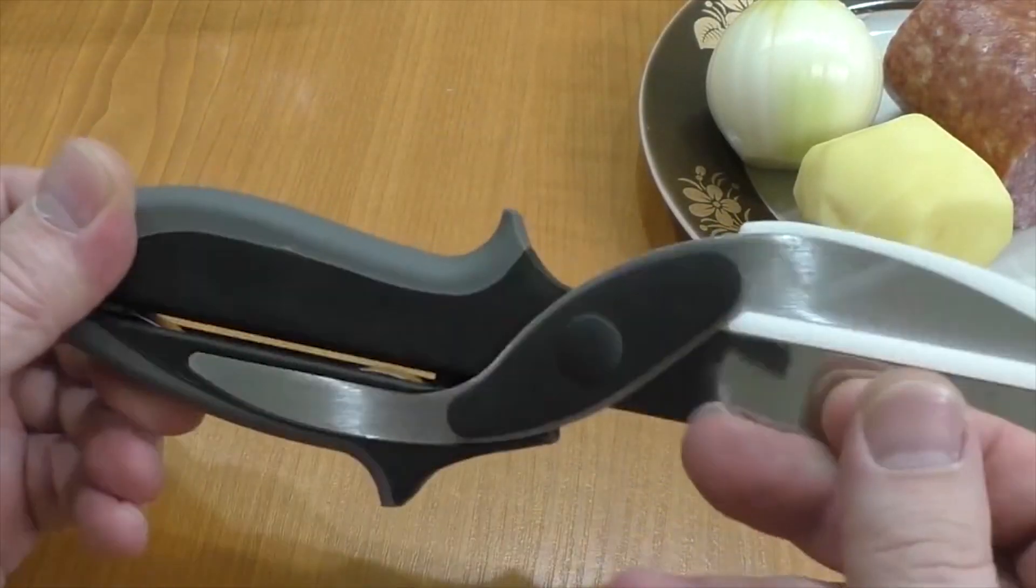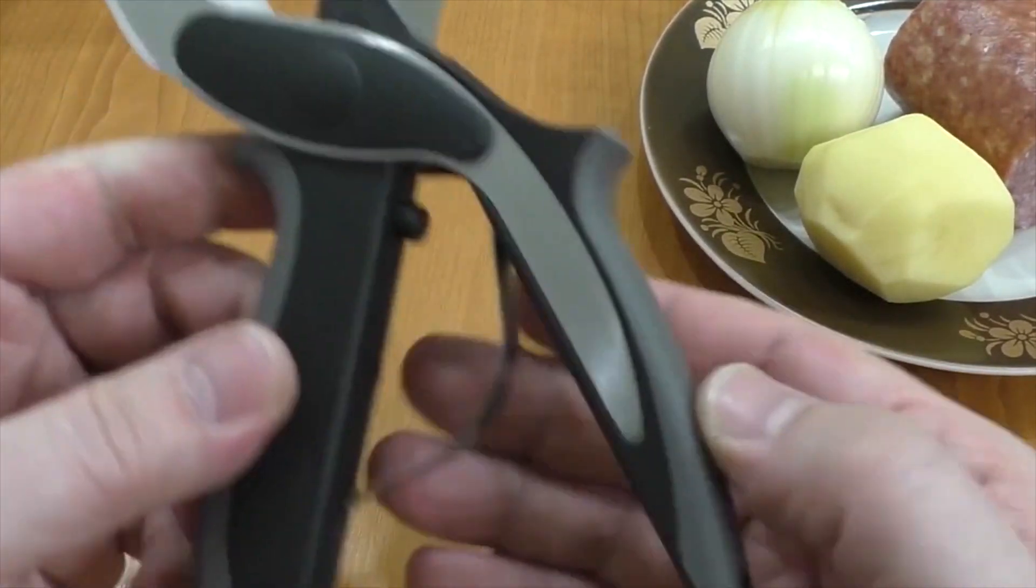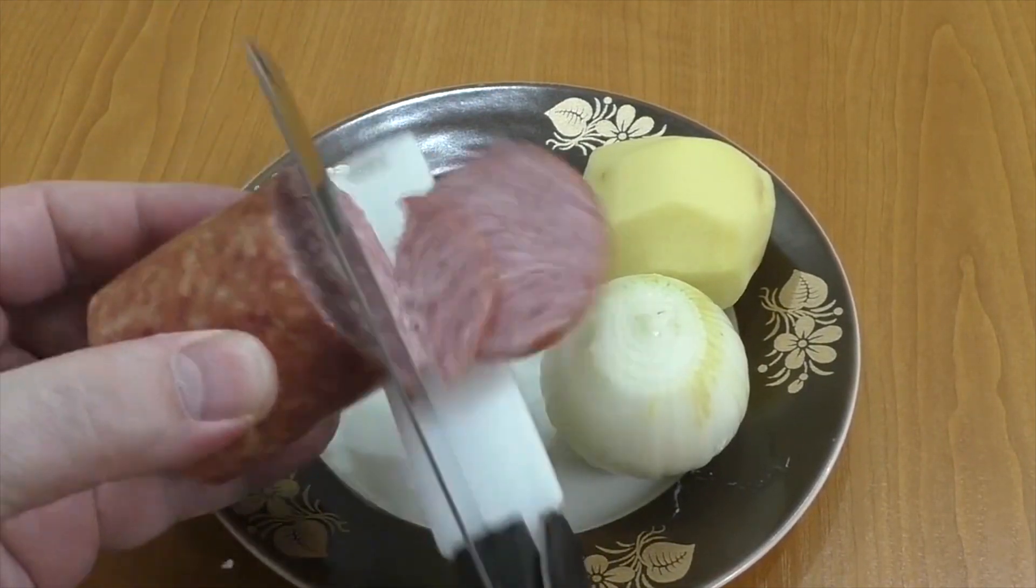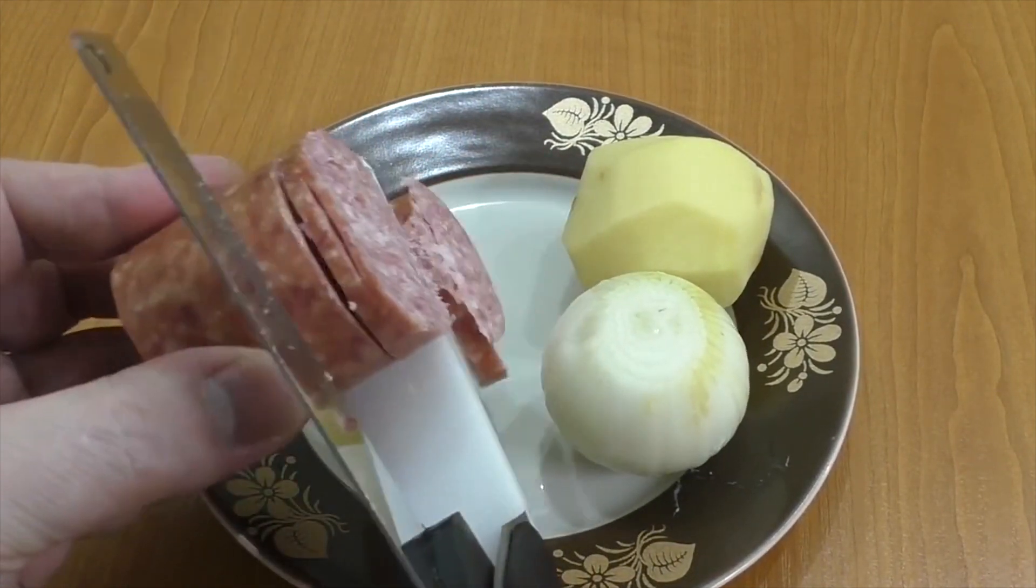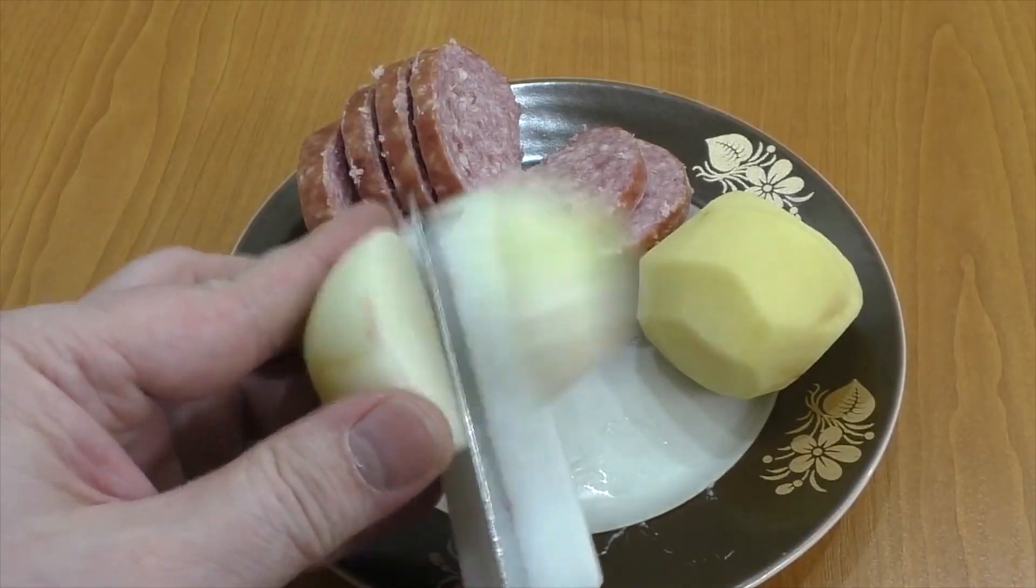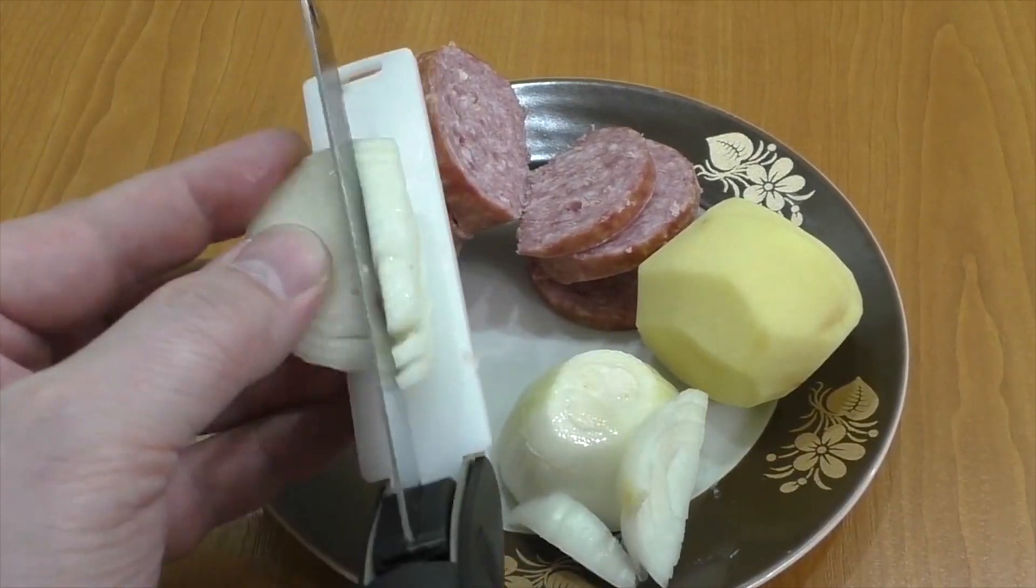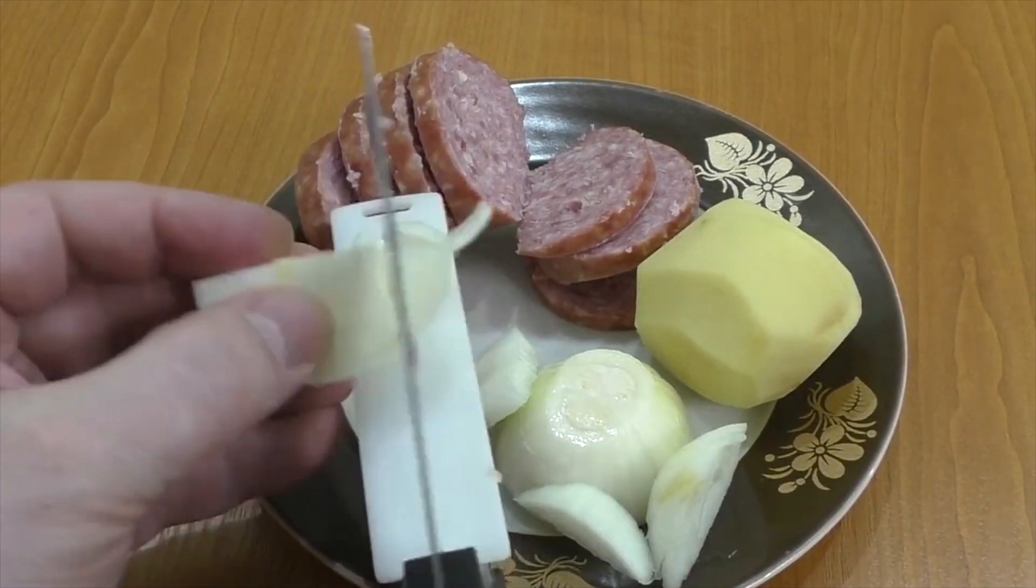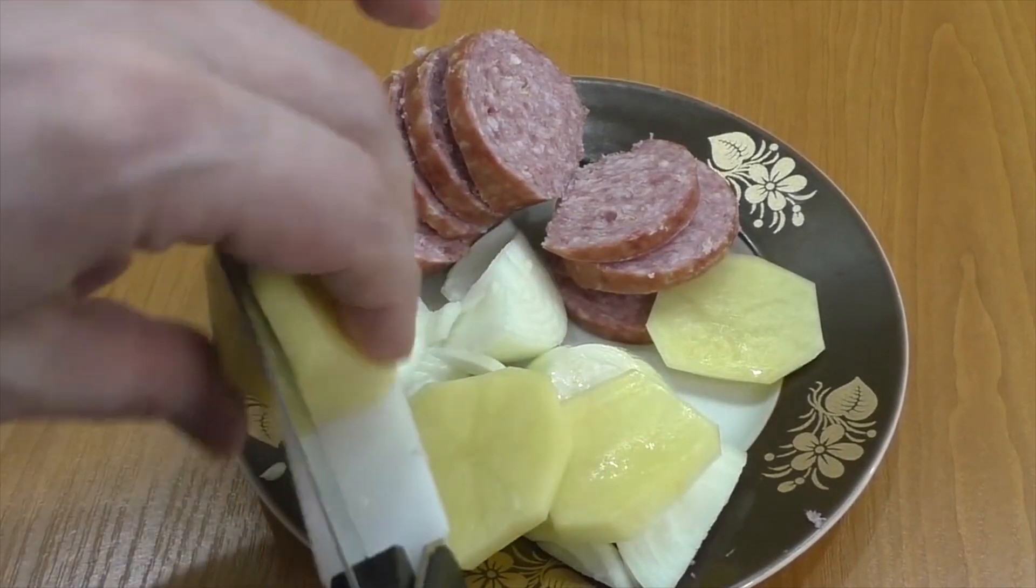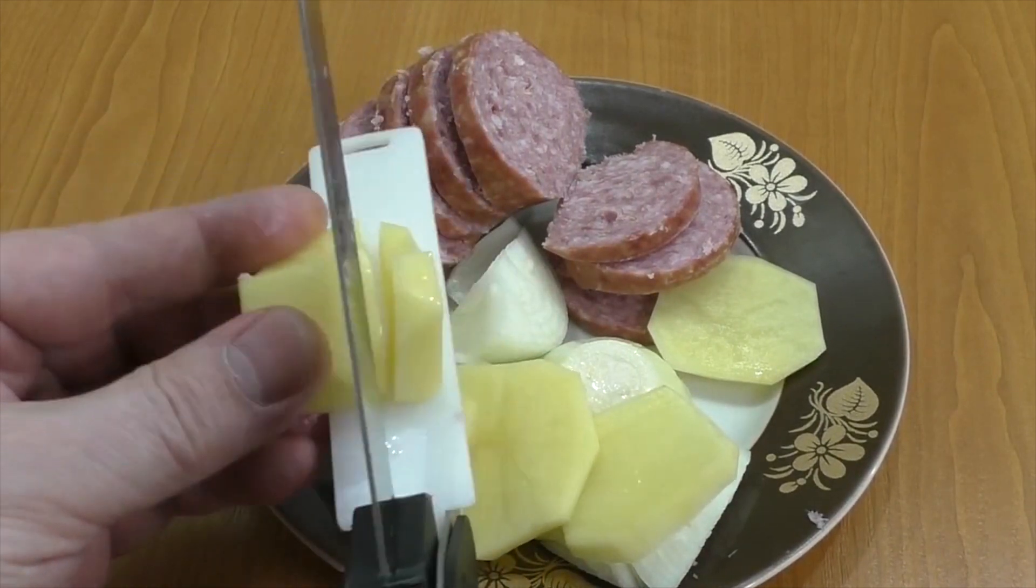This is a universal scissors knife, which can be used for cutting different food and vegetables. For example, sausages, onions, and potatoes. As you can see, it cuts fast and efficiently, and is very useful while cooking.